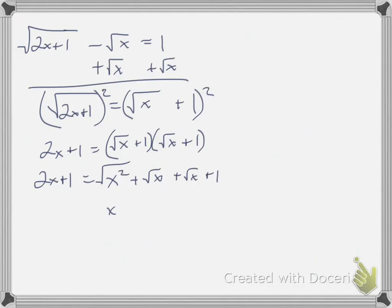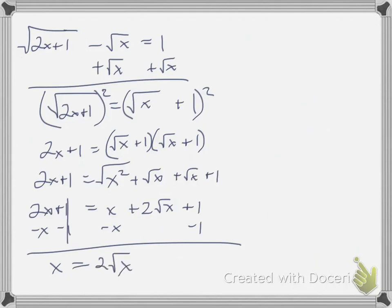This just becomes x. This is the same thing so far. Plus 2 square root of x plus 1. I'm going to subtract x from both sides. Subtract 1 from both sides. Because now what I have, I still have a radical. And I have to get that radical by itself in order to get rid of that one. That's where this one is a little bit different. So I'm moving everything that's not in the radical from this side over to the other side. Okay, so what I'm left with is x, these cancel out, is equal to 2 square root of x.